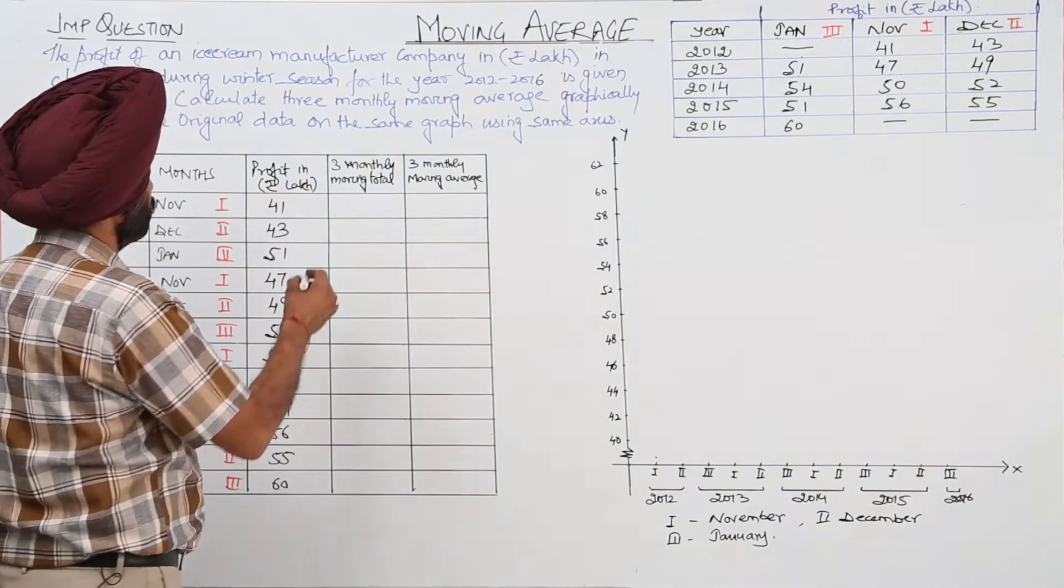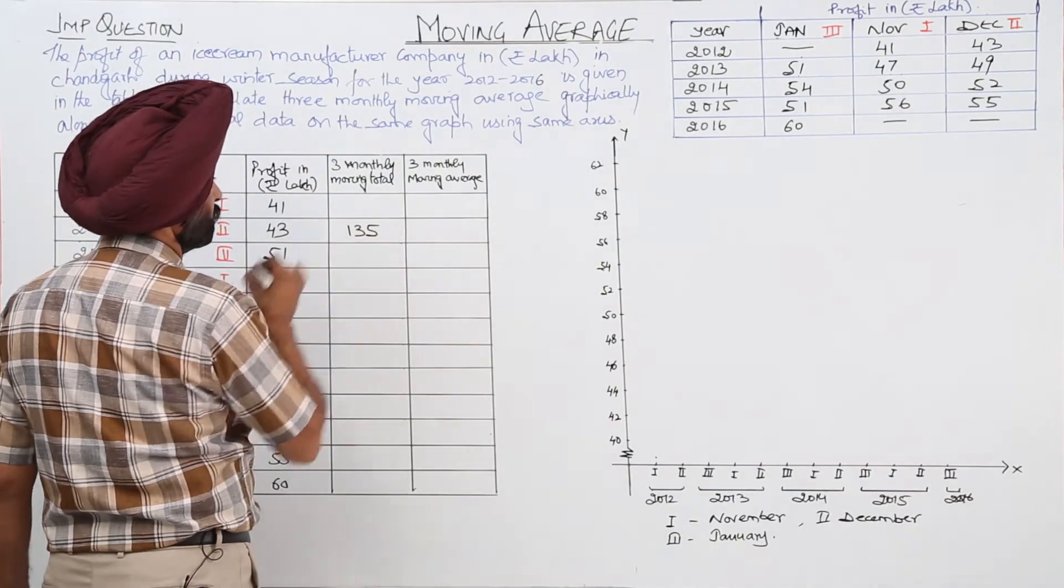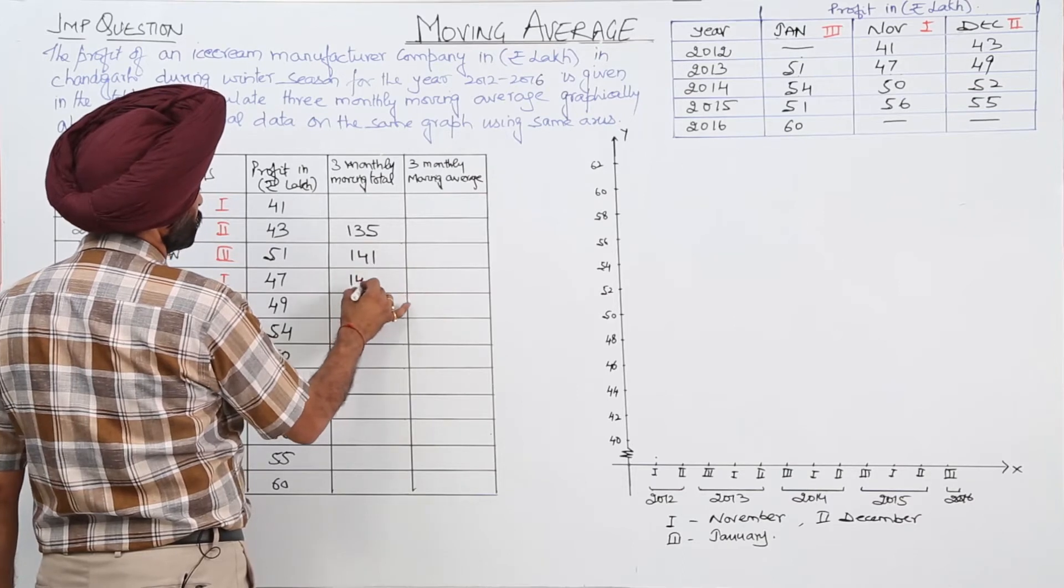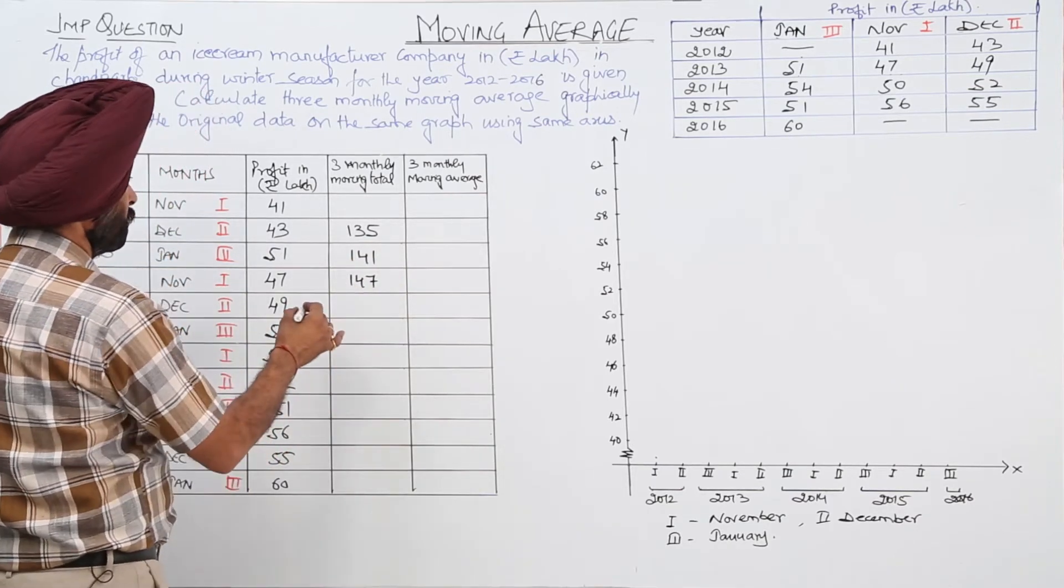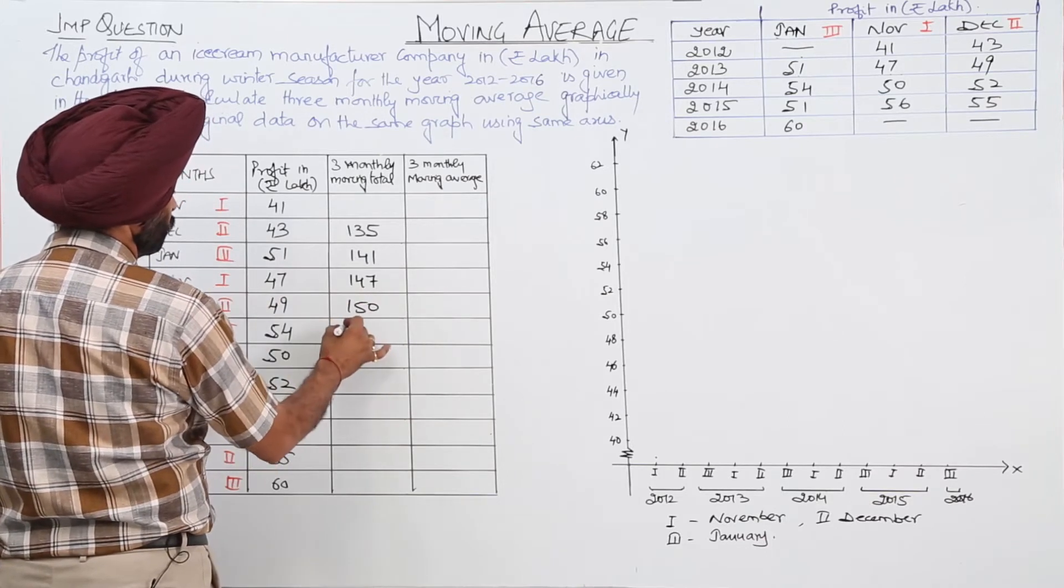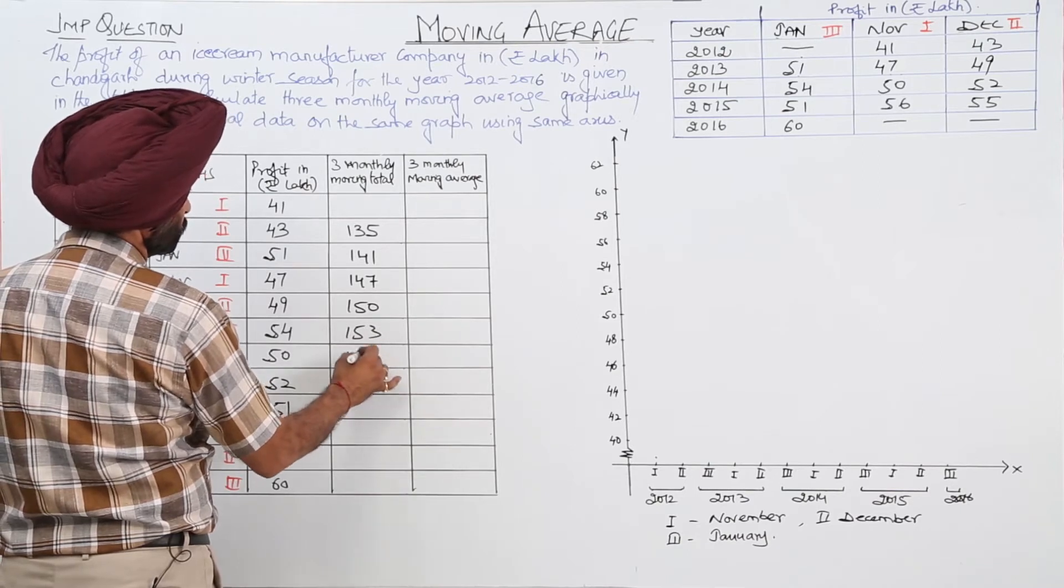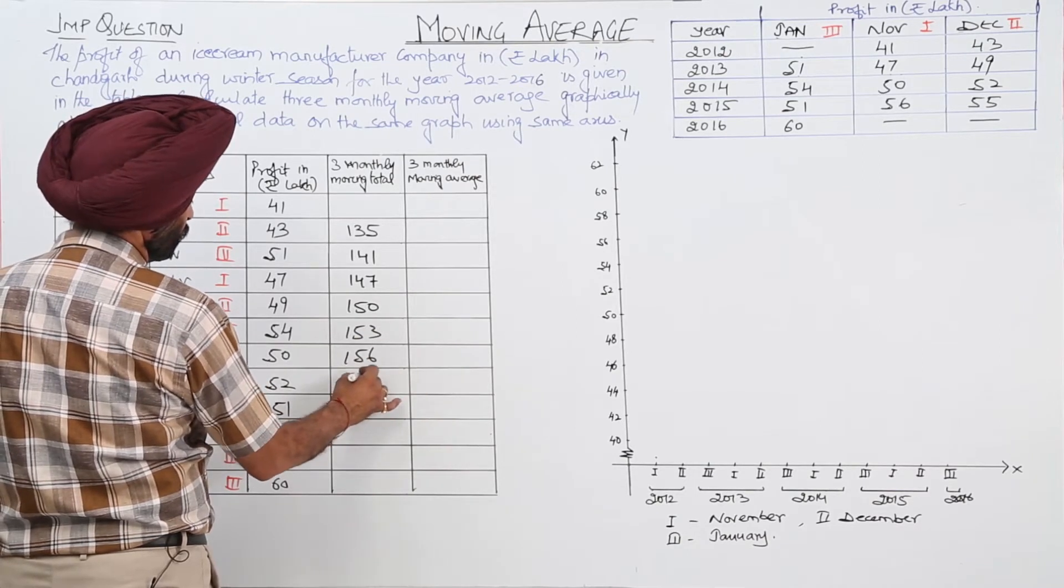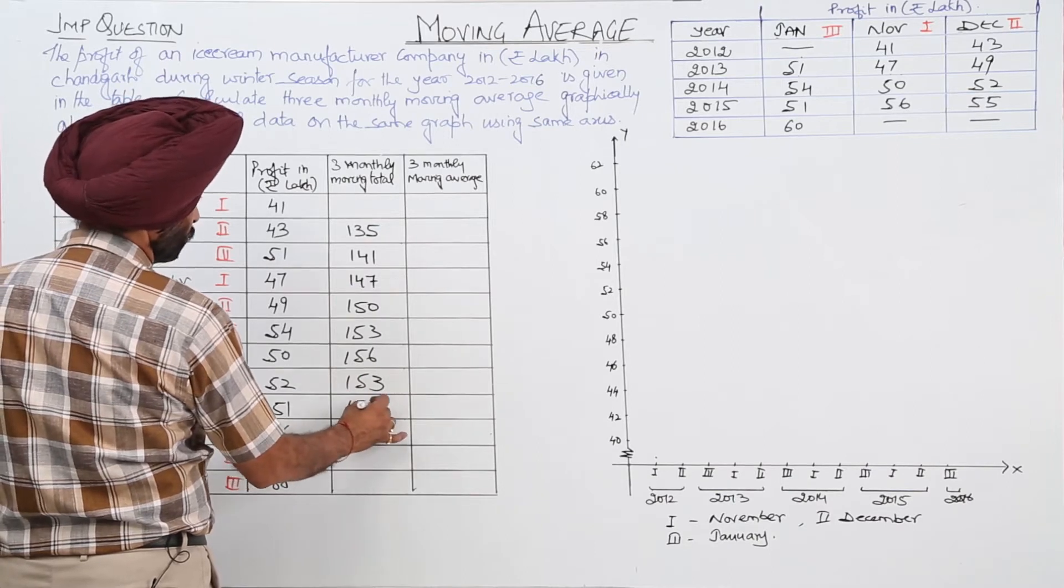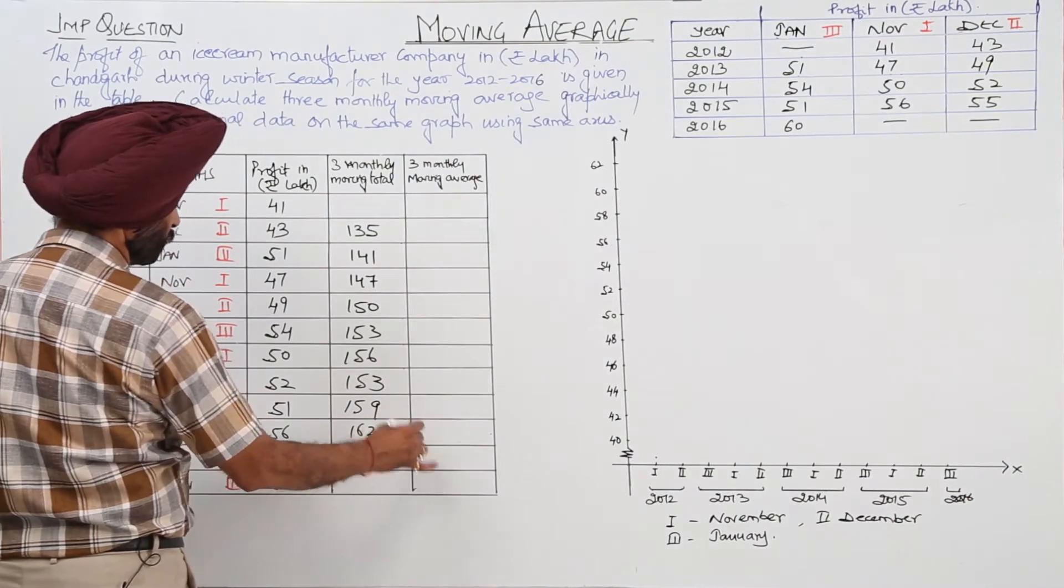41, 43, 51. So we are having 135, 141, 147, 150, 153, 156. If I am wrong anywhere you can just tell me that sir, here you are wrong. 159, 162, and 171.